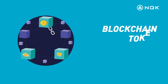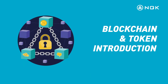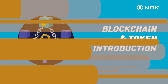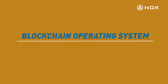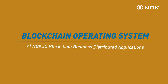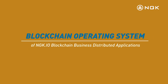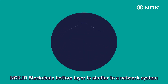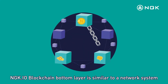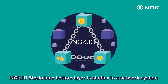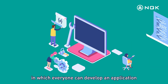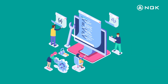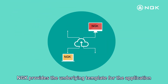Blockchain and Token Introduction. NGK.IO blockchain operates as a distributed application business operating system. The NGK.IO blockchain bottom layer is similar to a network system in which everyone can develop an application.